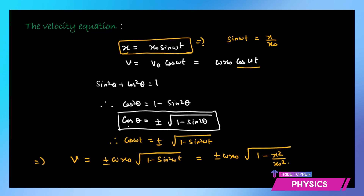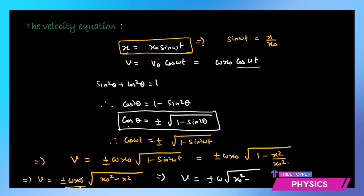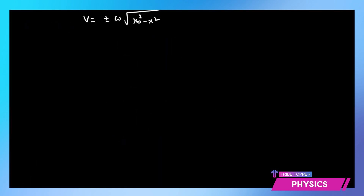Let us take the LCM. We get v = ±ω x₀ × √((x₀² − x²) / x₀²), and taking x₀ outside the root, the x₀ terms cancel out. We are left with the final equation: v = ±ω√(x₀² − x²). This is the equation for velocity at any instant.